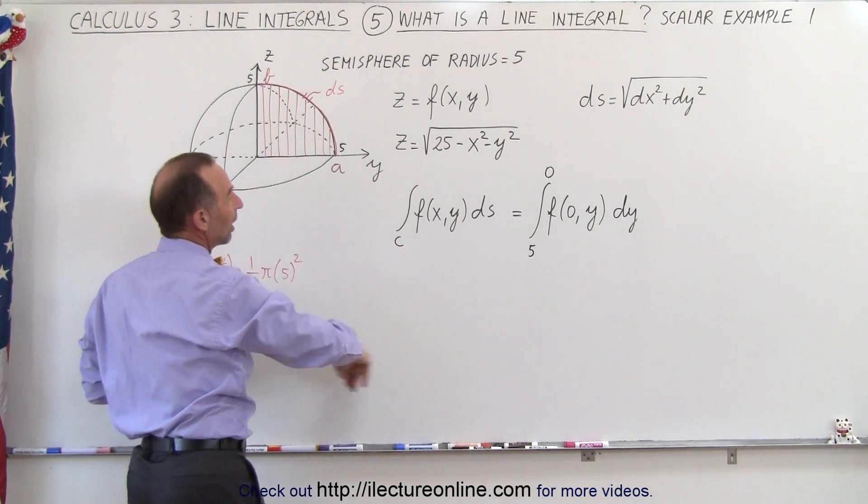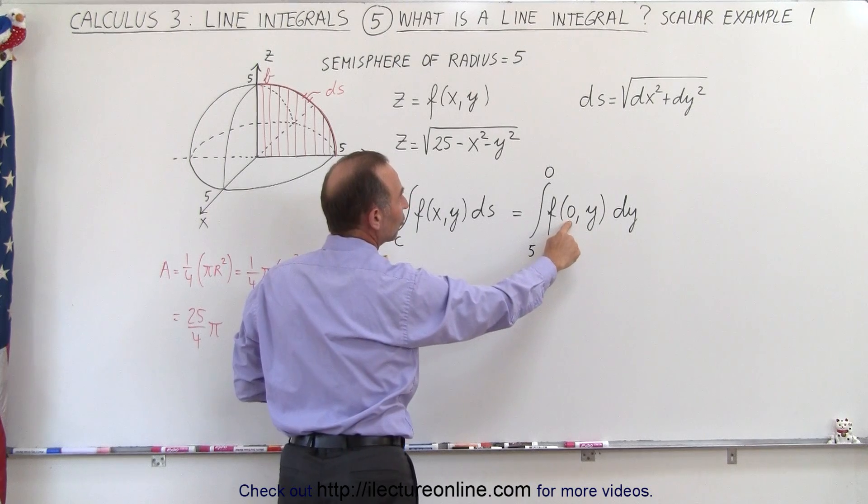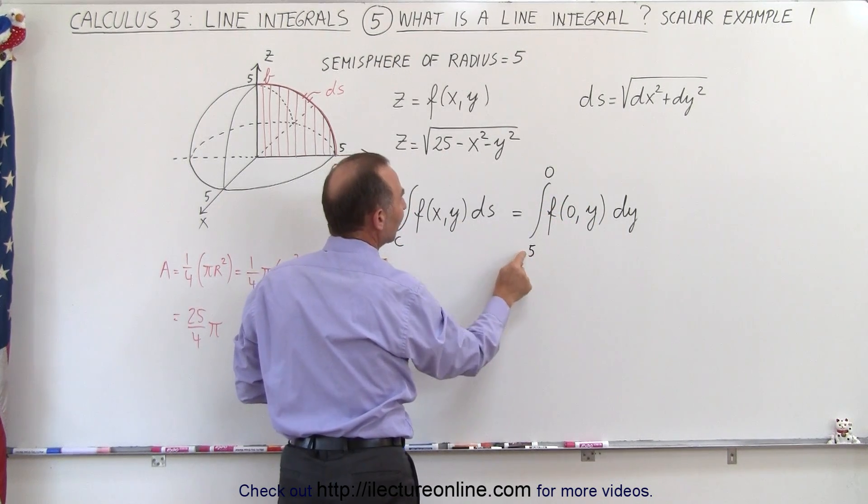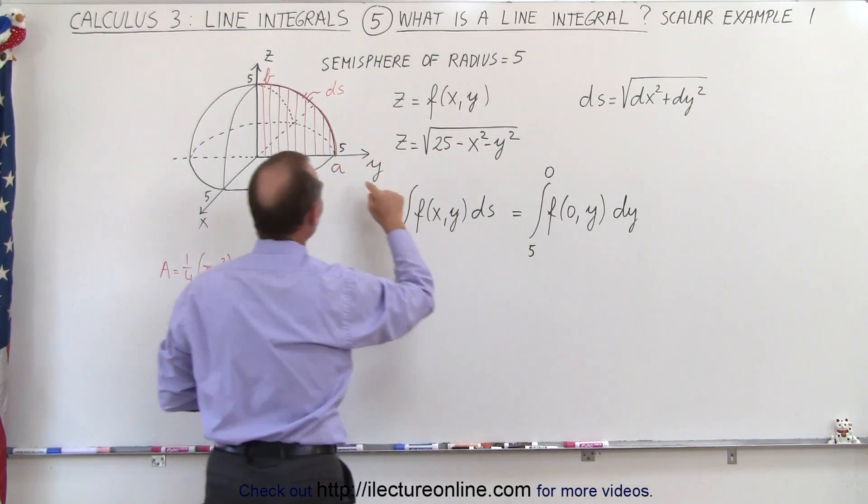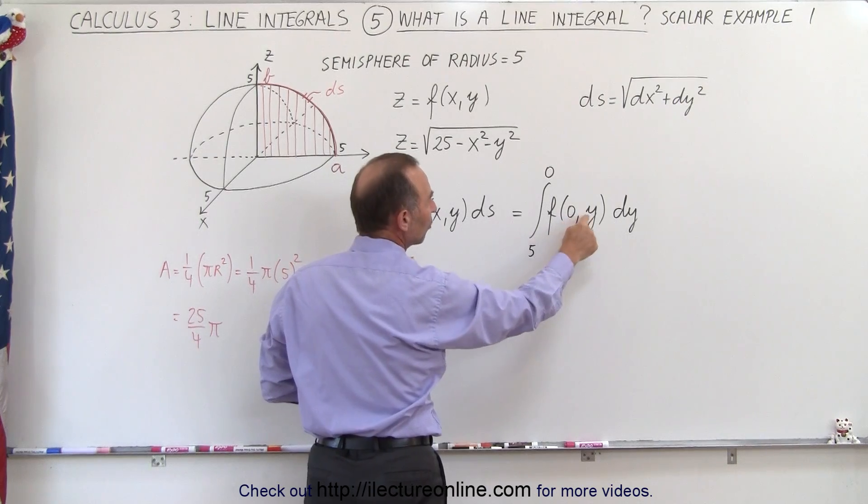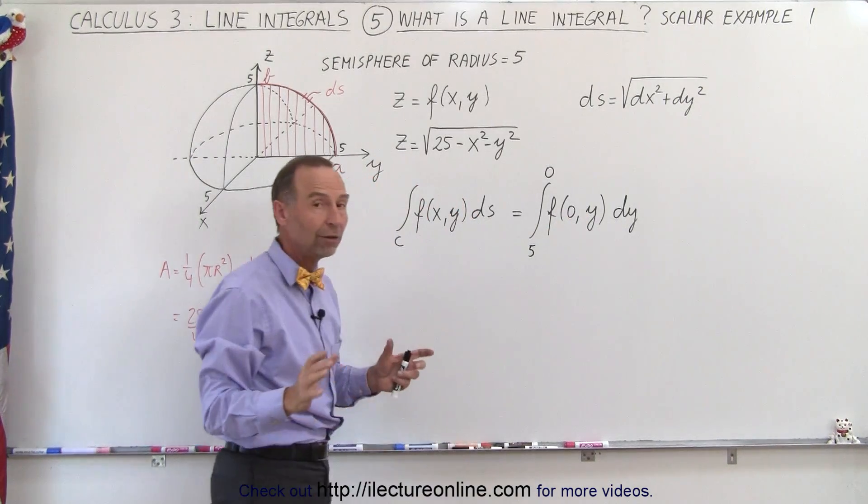Now, since x doesn't change, I can assume then that x equals 0, so I can simplify the equation where I'm simply integrating from 5 to 0, from y equals 5 to y equals 0, along that path with x being equal to 0, y will be the only variable.